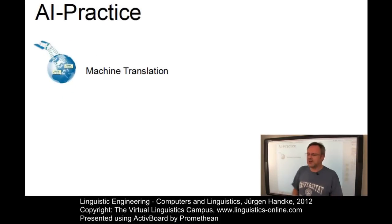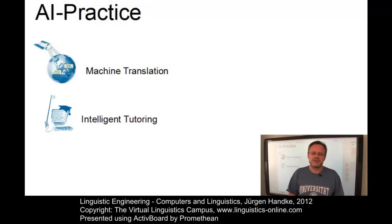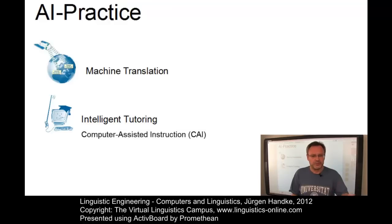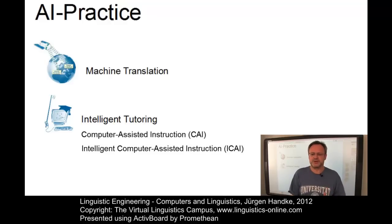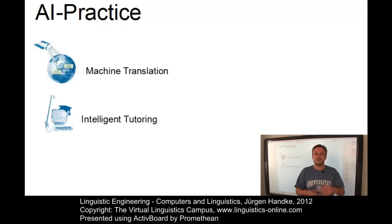Another practical application in artificial intelligence deals with intelligent tutoring. For a long time, artificial intelligence has been interested in machine-based learning. Numerous approaches have been developed: Computer Assisted Instruction (CAI), Intelligent Computer Assisted Instruction (ICAI), Intelligent Tutoring Systems (ITS), Computer Based Training (CBT), and so on. None of these approaches has reached the quality of a human teacher. Nevertheless, a number of important consequences for the learning process have emerged.